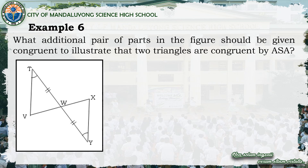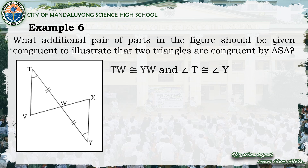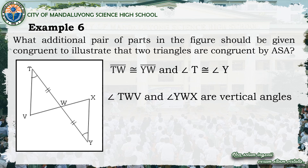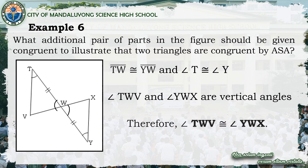Last example for ASA: what additional pair of parts should be given congruent to illustrate that the two triangles are congruent by ASA? We have triangle TWV and triangle YWX. The given are: side TW is congruent to side YW, and angle T is congruent to angle Y. Since angle TWV and angle YWX are vertical angles, by the vertical angle theorem they are congruent. Therefore, angle TWV is congruent to angle YWX — that is the additional pair needed for ASA.